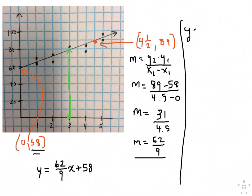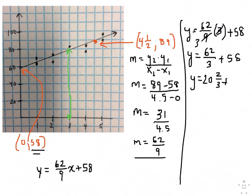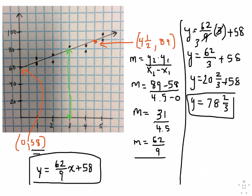So we have y equals 62 ninths times three plus 58. The three and nine simplifies to 62 thirds plus 58. That's 20 and 2 thirds plus 58, which equals 78 and 2 thirds. So based on our trend line equation, the final exam score would be 78 and 2 thirds for an AP exam score of three.